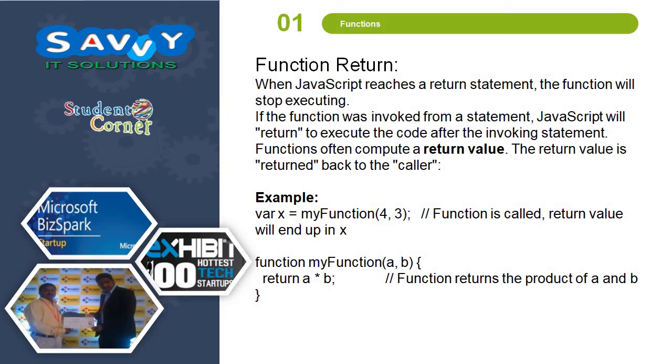When JavaScript reaches a return statement, the function will stop executing. If the function was invoked from a statement, JavaScript will return to execute the code after the invoking statement. Functions often compute a return value. The return value is returned back to the caller.